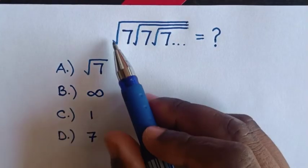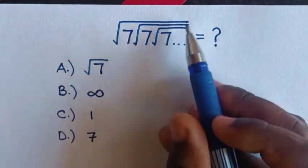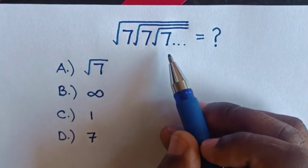Hello! How to solve the nested square root: square root of 7, square root of 7, square root of 7, continuing infinitely?